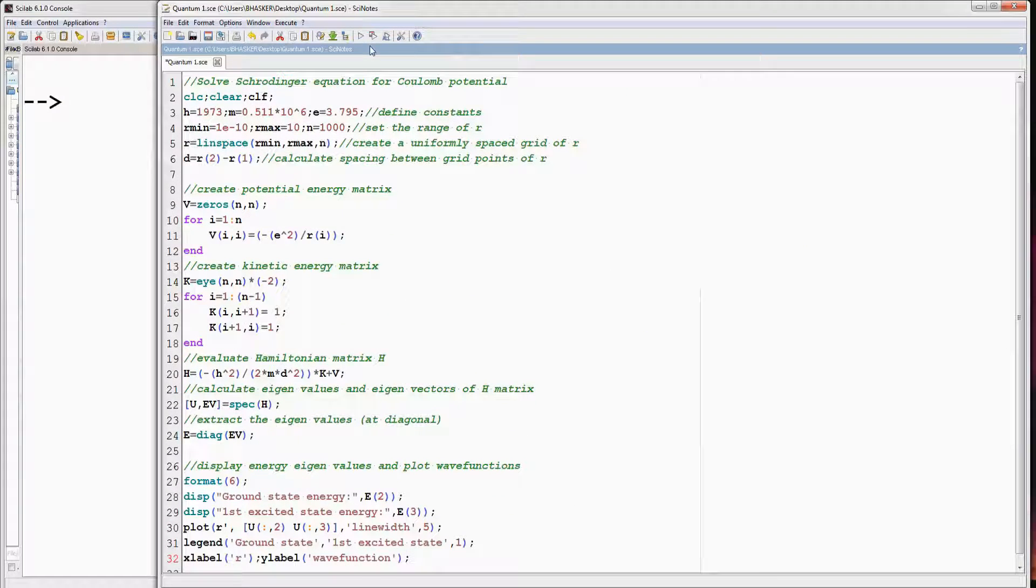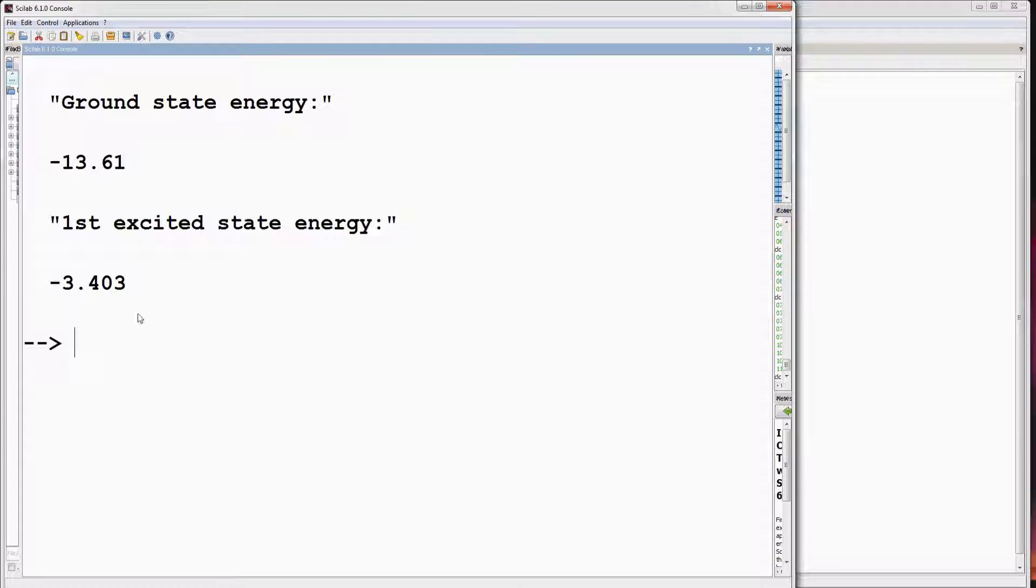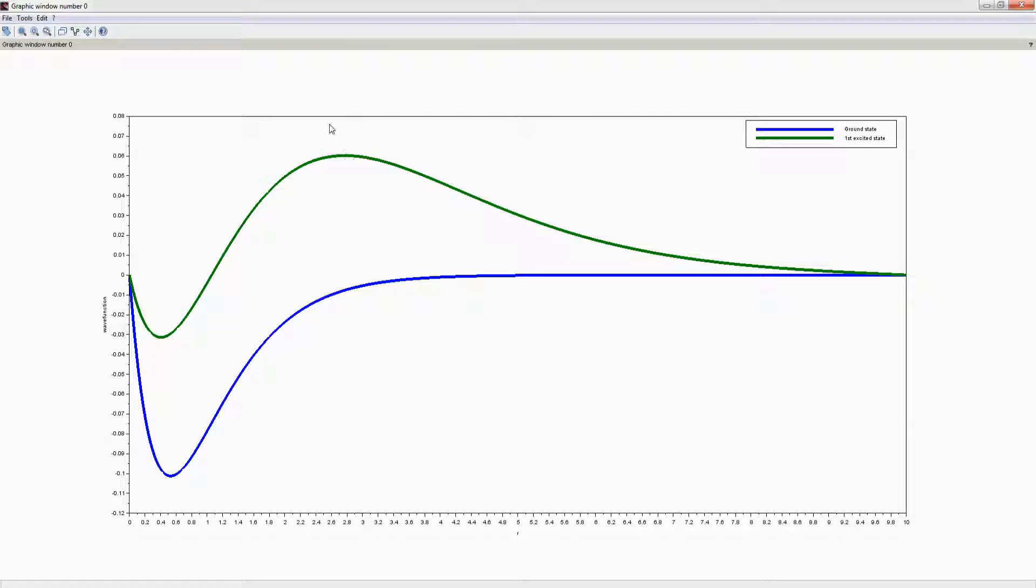Now run this program. So we have the ground state energy and first excited state energy in electron volts. Maximize graphical window. Now there is a problem here that we haven't discussed in the previous part of this video.